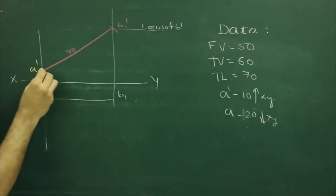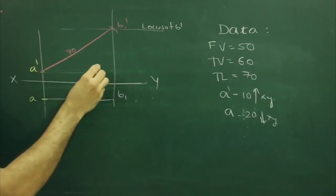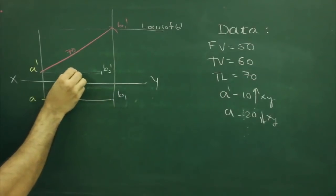Same way, I can project front view length, that is a dash b2 dash, that is 60... sorry, that is 50.